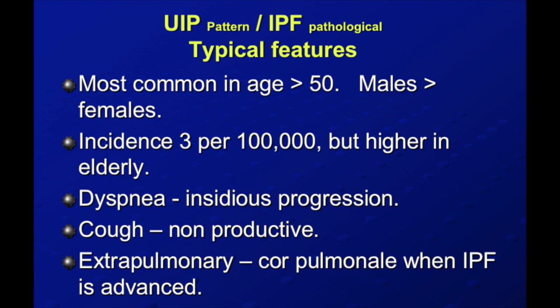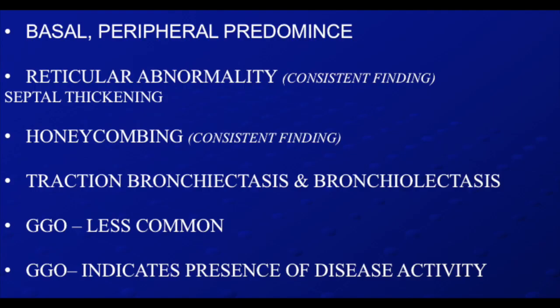IPF is commoner in males, usually 50 years or more. There is progressive dyspnea and pulmonary hypertension. The patterns are usually basal — lower lobes — and sub-pleural predominant, so there is an apico-basal gradient. Consistent findings include septal thickening, honeycombing, traction bronchiectasis, and bronchiolectasis. Ground glass opacity is less common and is commoner with NSIP.